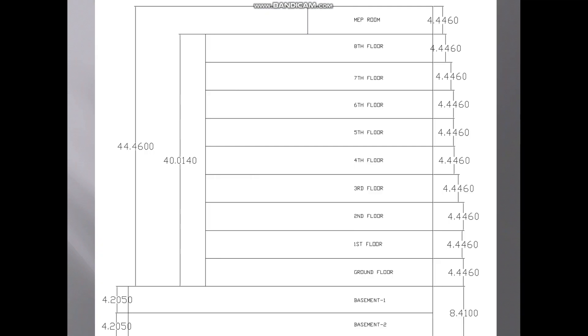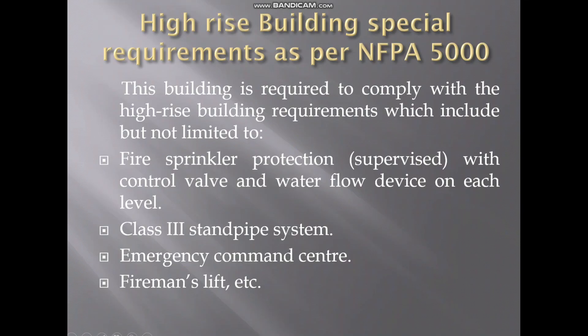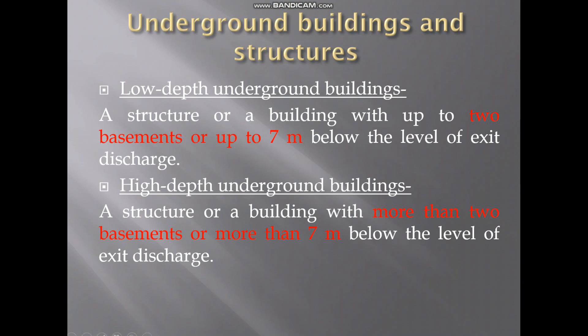In our example, we have two basements — basement one and basement two — with a total depth of 8.4 meters, each at 4.2 meters. A structure with up to two basements or up to seven meters below the exit discharge level is considered low depth. In our case, while we comply with the two-basement rule, the depth is more than seven meters, so it will be categorized as a high-depth underground building.